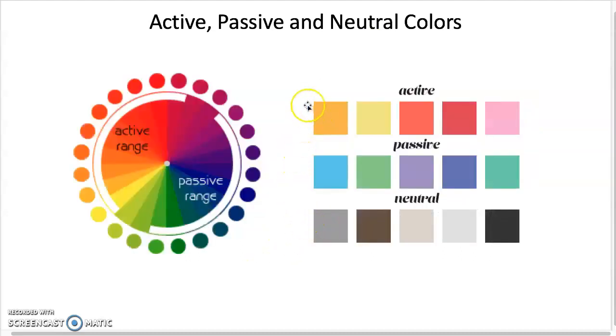In general though, we think of active ranges as being the really bright warm colors are the most active. Passive being the cooler colors. And then neutrals besides gray, we're talking about browns, tans, and things like that. And black and white are neutral as well.